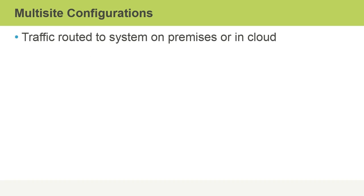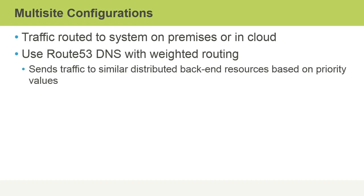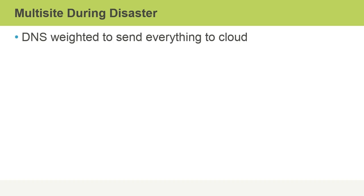With multi-site configurations, traffic can be routed to systems in on-premises environments or in the cloud. We can use Route 53 DNS with weighted routing, which allows us to send traffic to similar distributed back-end resources based on a priority value. DNS can also be configured during a disaster so that it's weighted such that traffic would be sent to the cloud instead of to our on-premises active configuration.